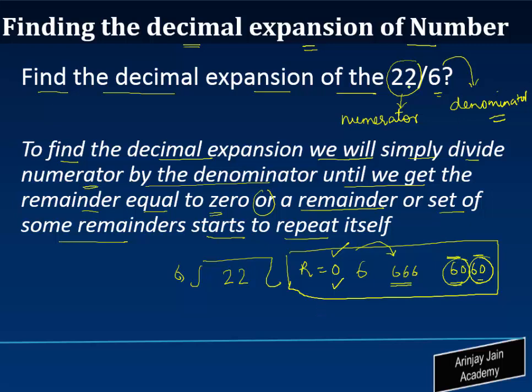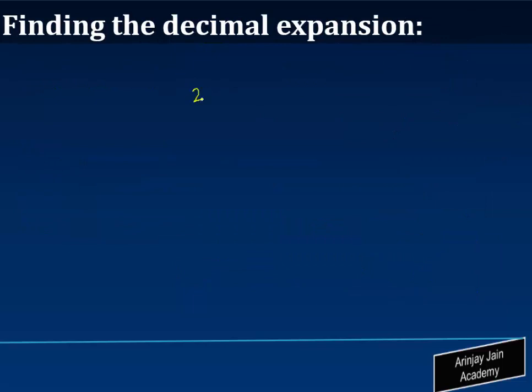Let us see what is the decimal expansion of 22 by 6. So 22 divided by 6: 6 times 3 gives us 18. When we subtract 18 from 22, we get 4.